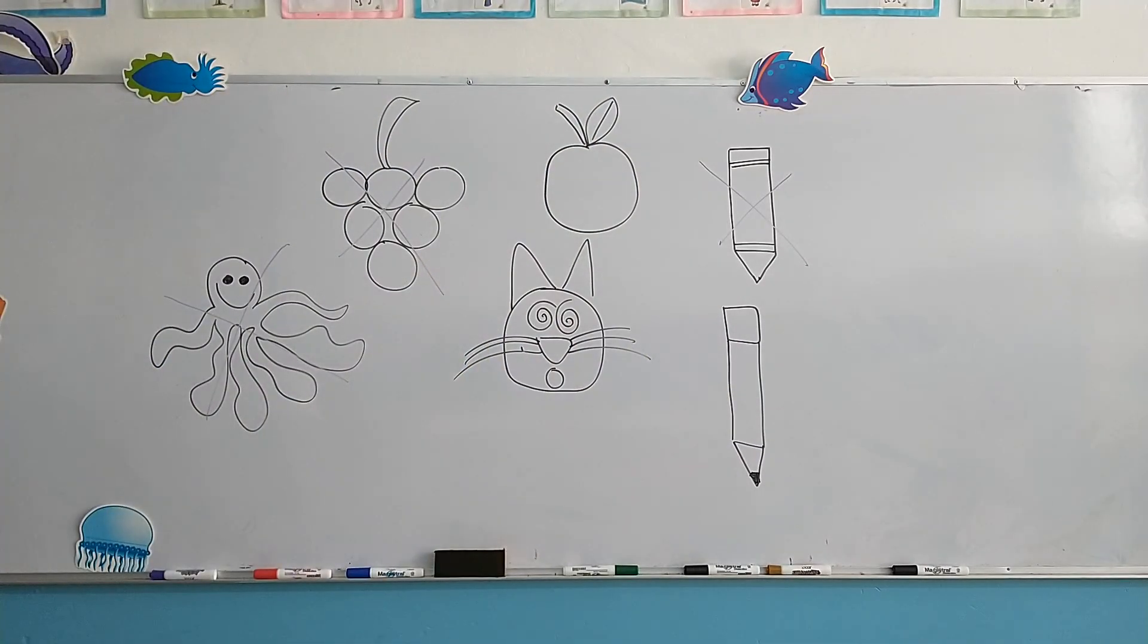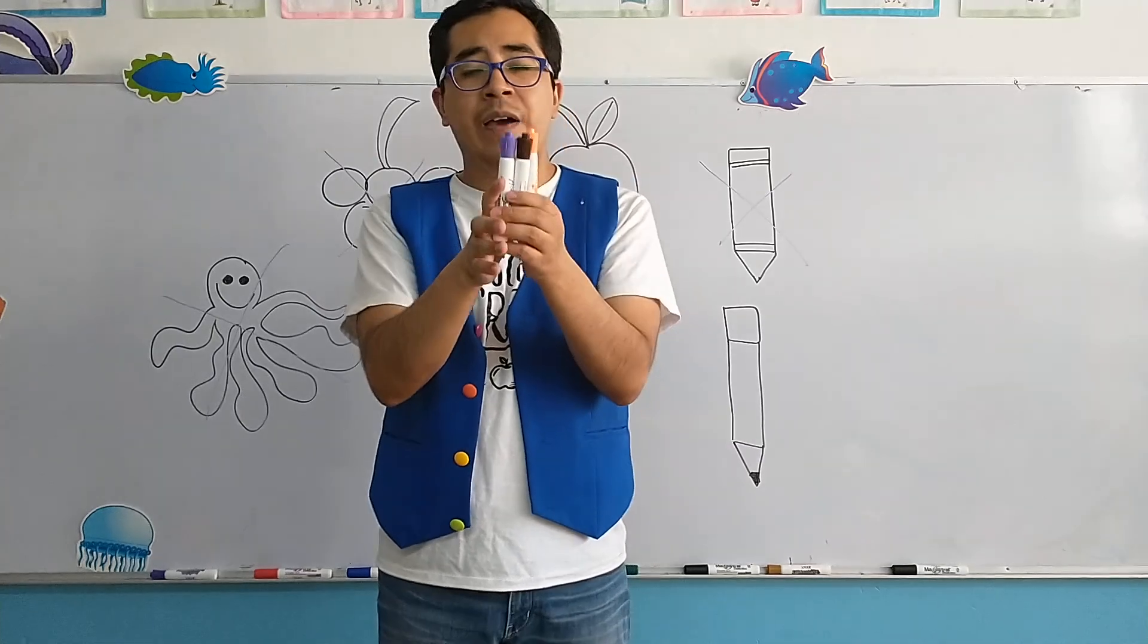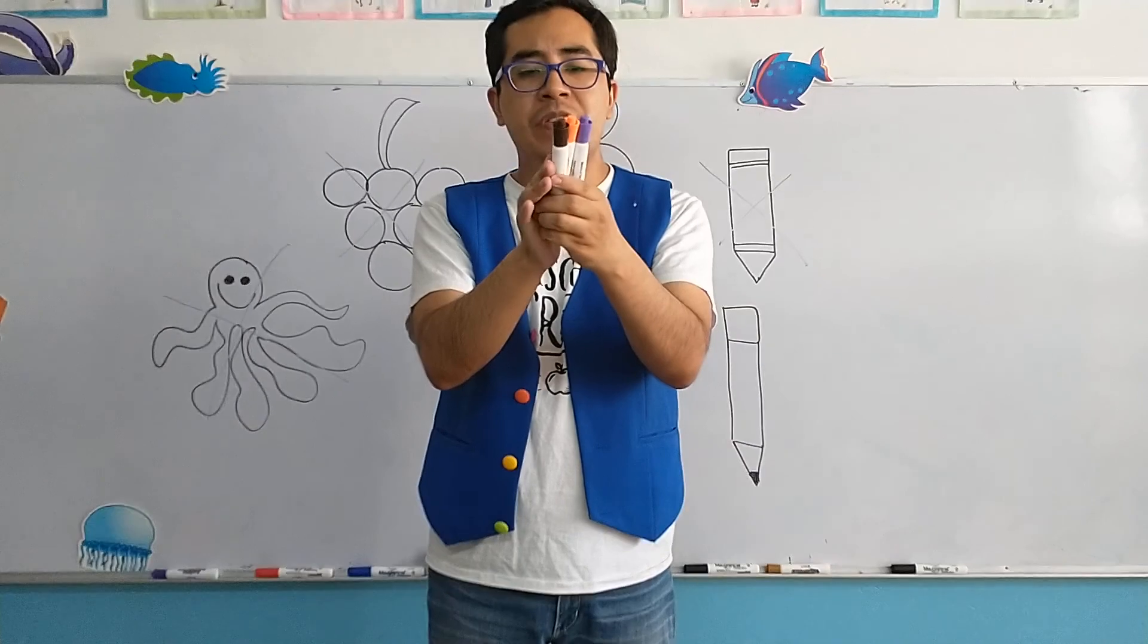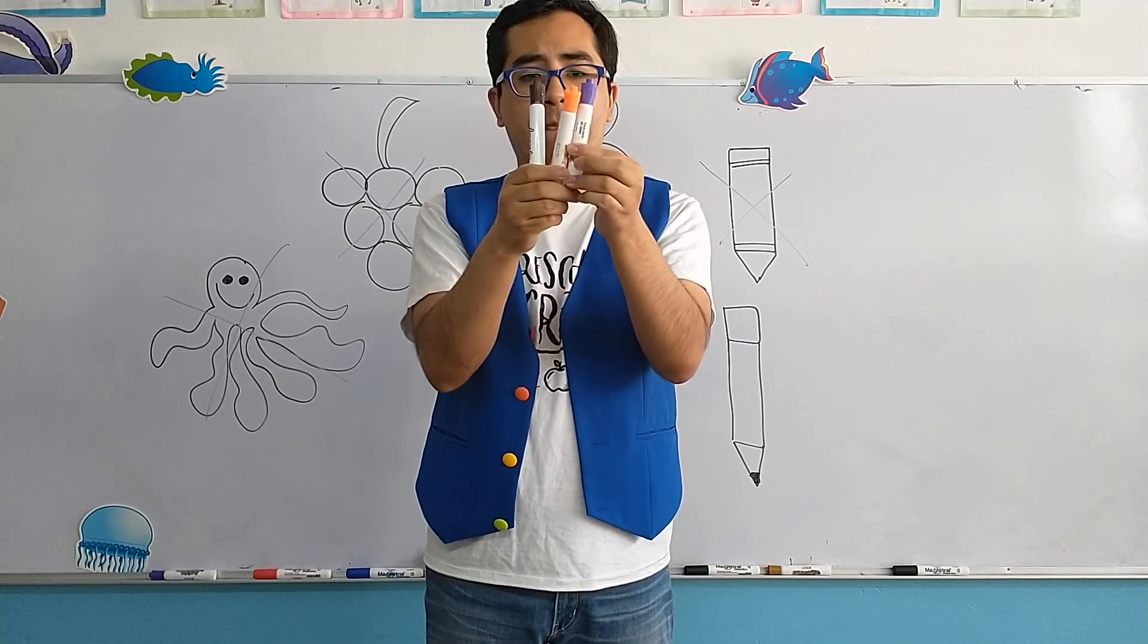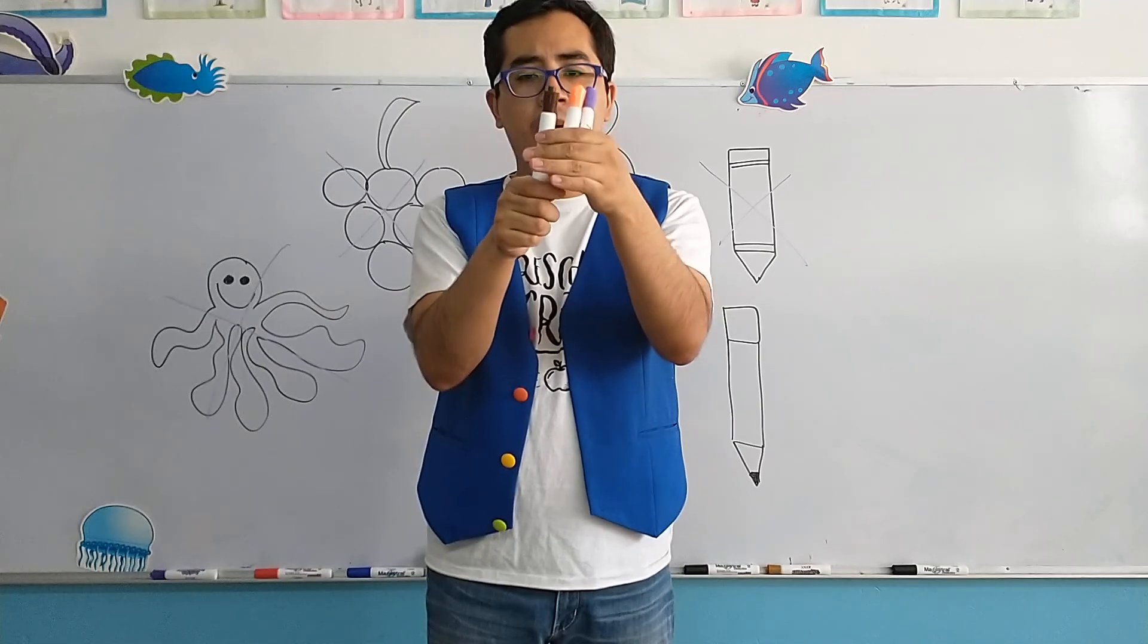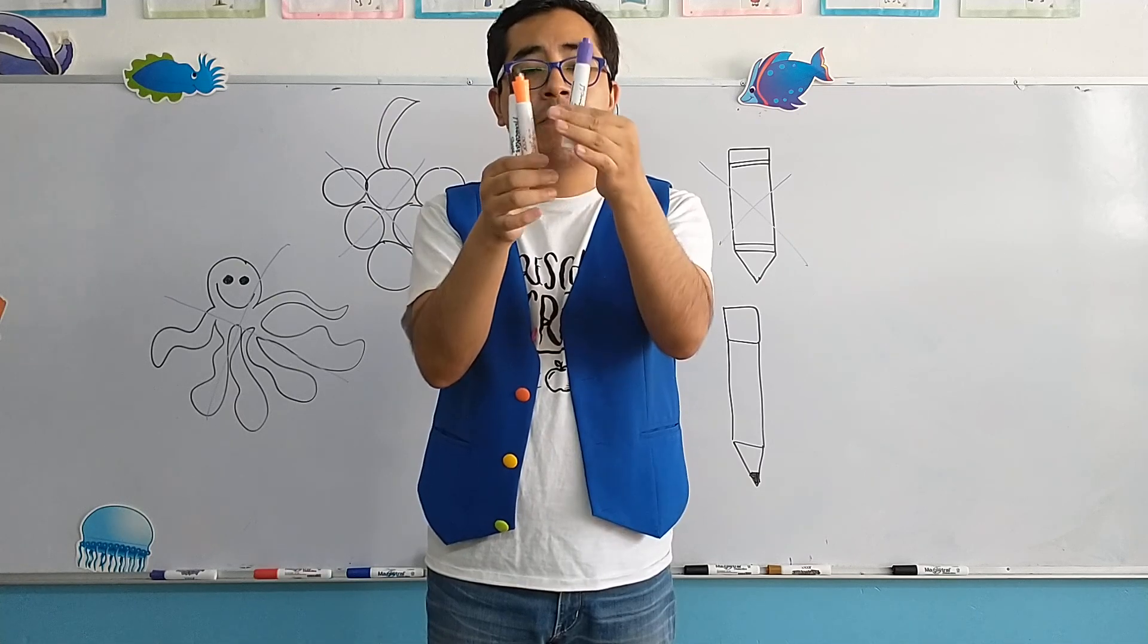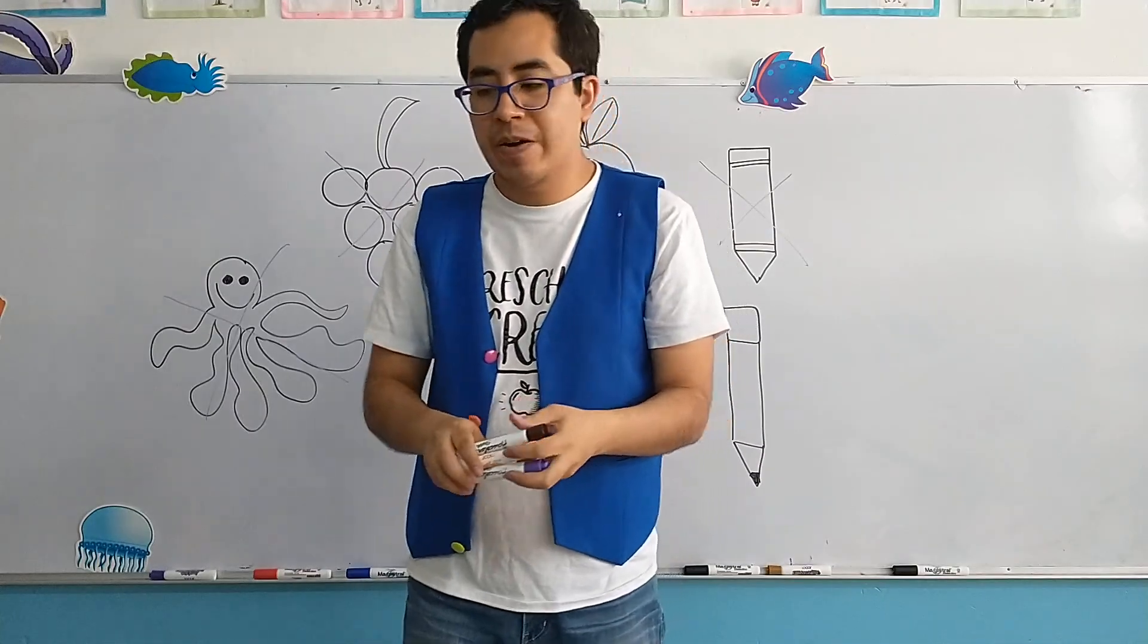And finally, let's practice with some markers. Now I have here, once again, three markers. Which one of these three is color purple? Number one, number two, or number three? Number one. The first one is color purple. Very good.